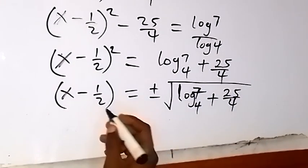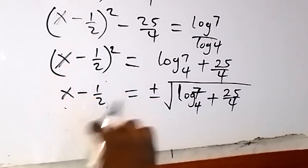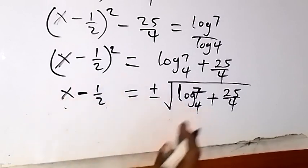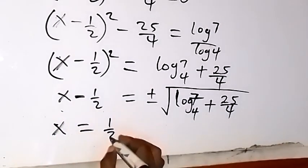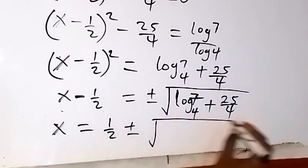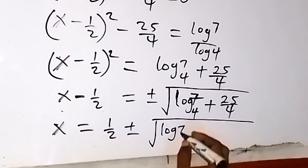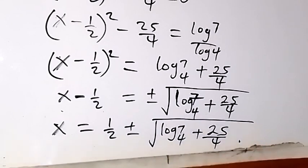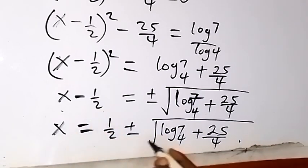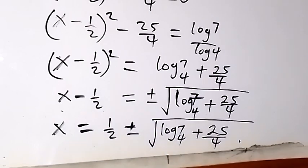We remove the square, and when we take one half to that side, minus one half becomes plus one half. So we then have x equals one half plus or minus square root of log 7 base 4 plus 25 over 4. Here we have two solutions: the first is one half plus the square root of log 7 base 4 plus 25 over 4, and the second is one half minus the square root of log 7 base 4 plus 25 over 4.